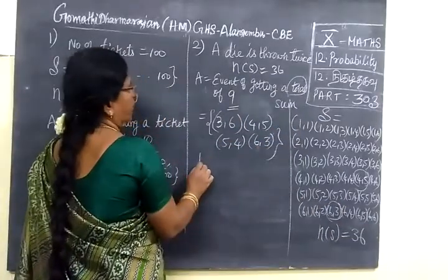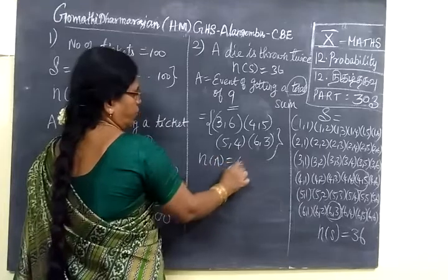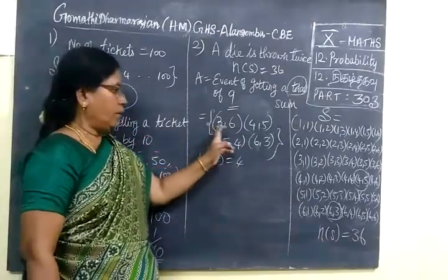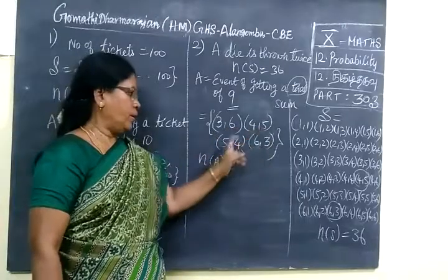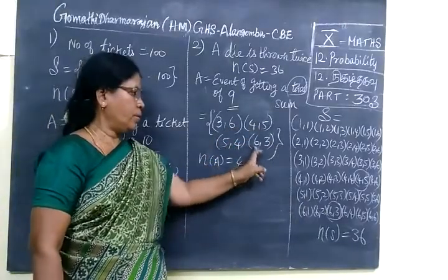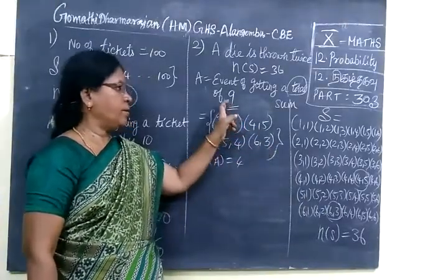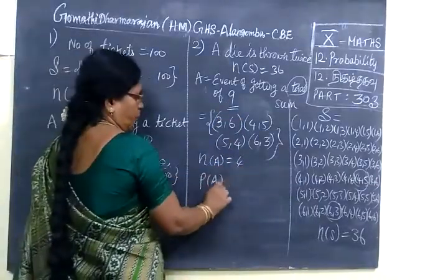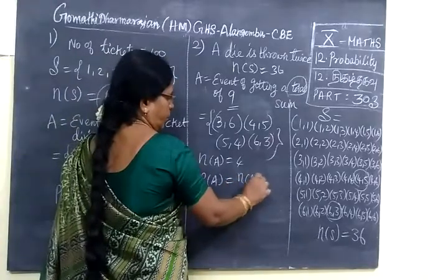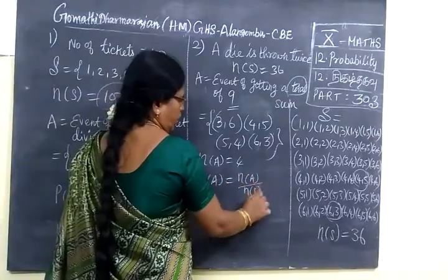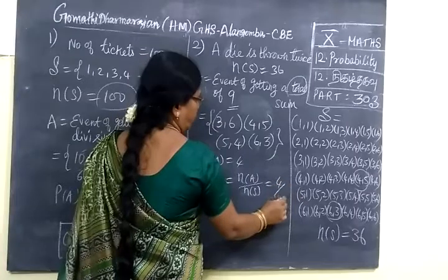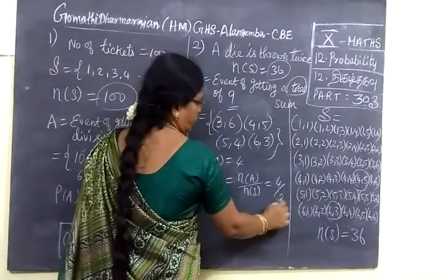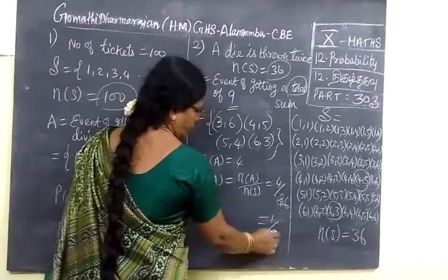So P(A), n(A) equal to 4. If you add 3, 6, 4, 5, then 5, 4, 6, 3, you get the answer as 9. So n(A) equal to 4. Therefore, P(A) equal to n(A) by n(S) equal to 4 by, total number is what? 36. So the answer is 1 by 9.